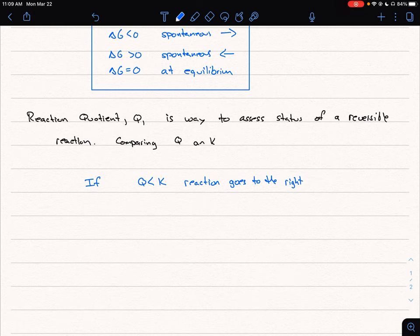So if Q is less than K, we're going to end up forming more products, and so the reaction's going to the right.